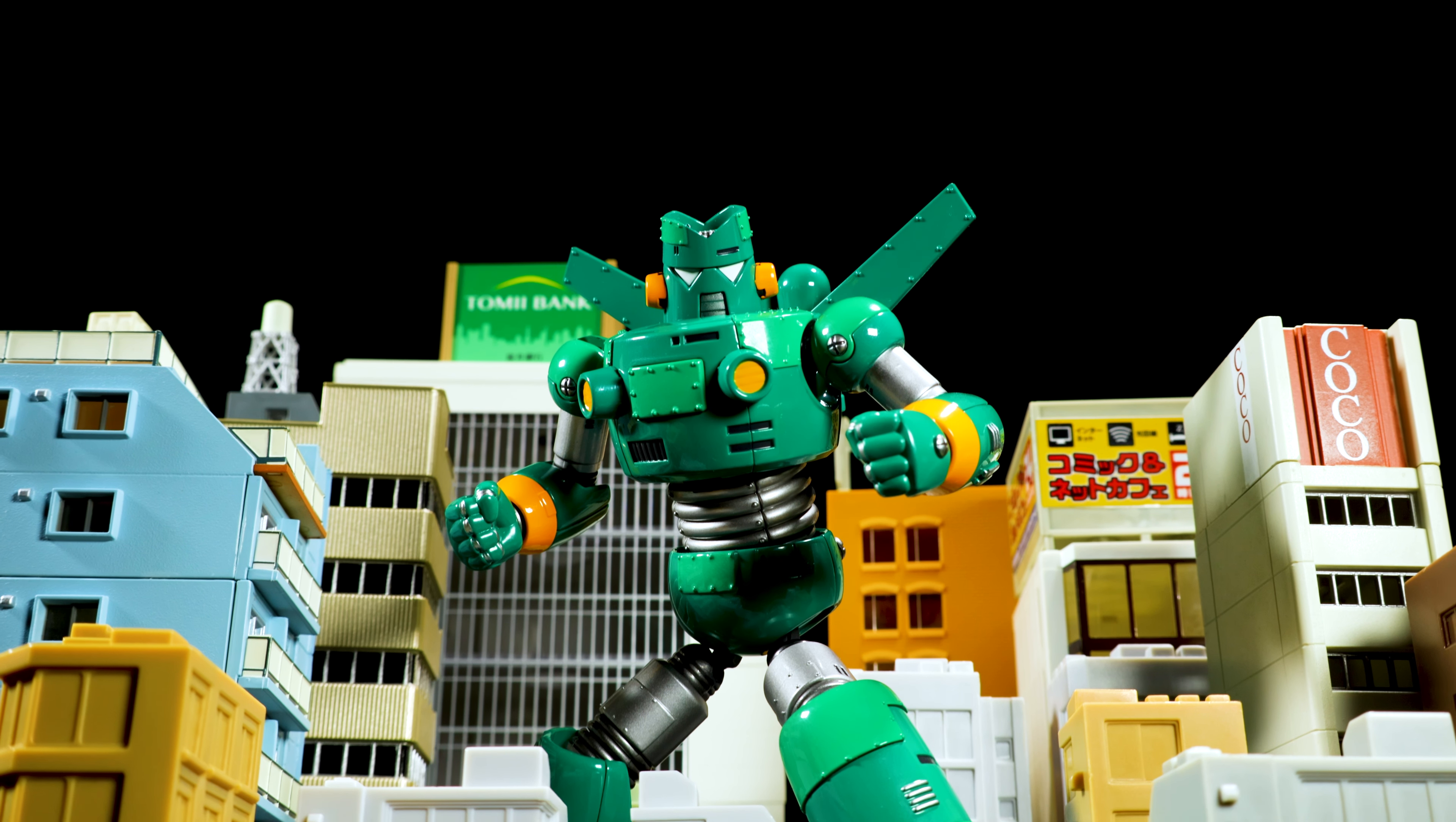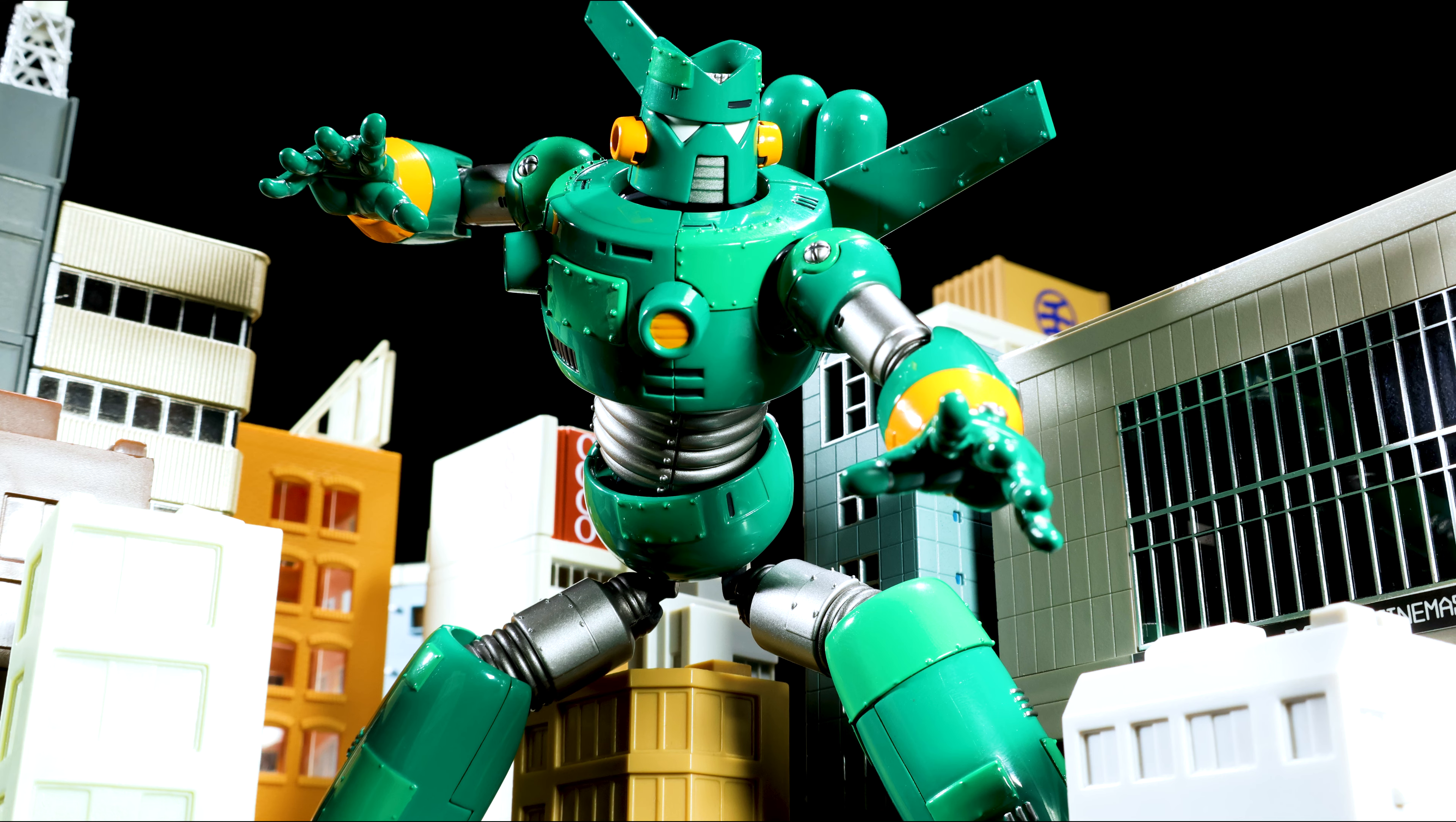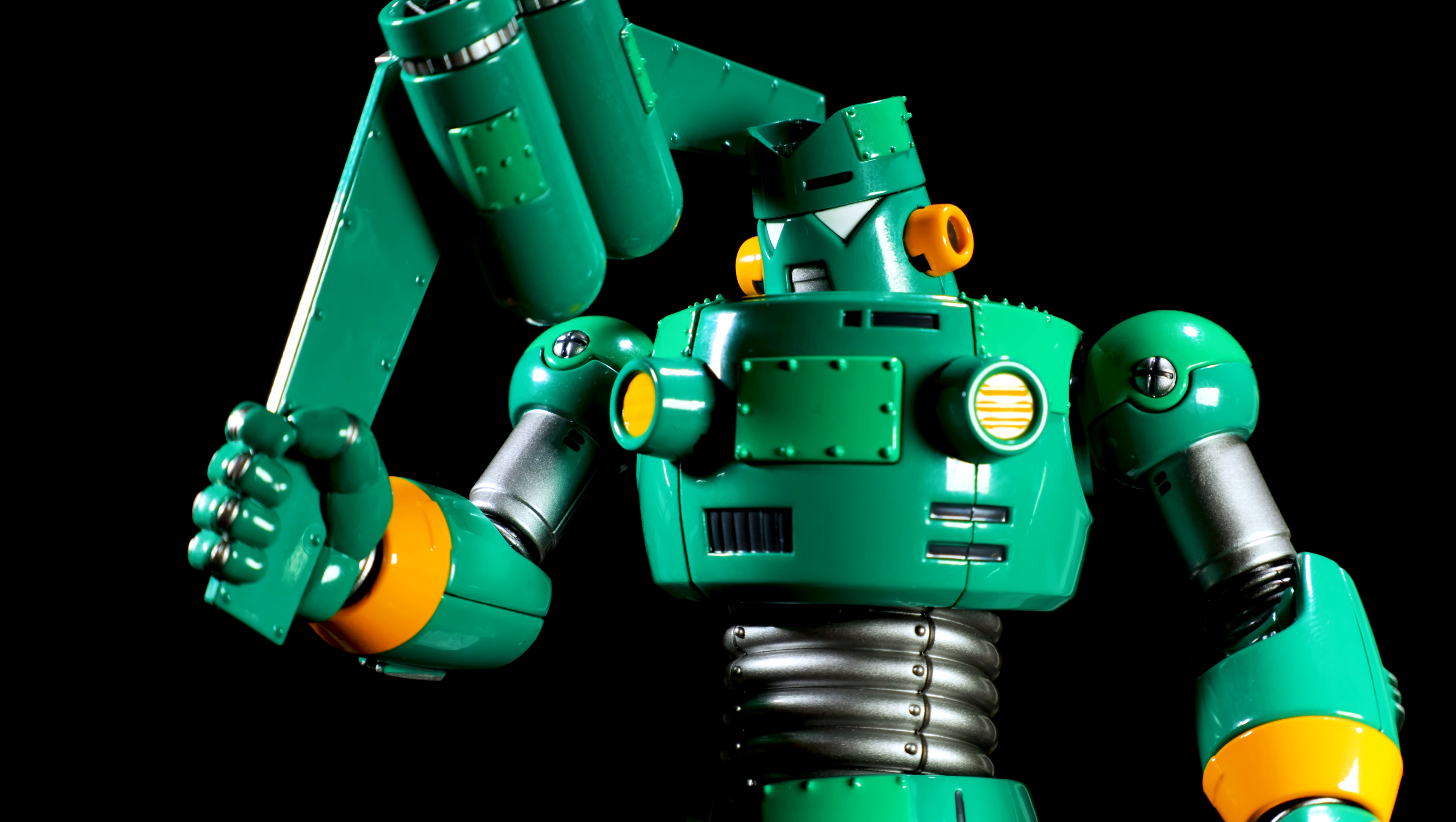For accessories, first up we have our two pairs of hands. We have a pair of open hands and we have a pair of holding hands designed to hold the wings so we can throw out our Kanton Boomerang.